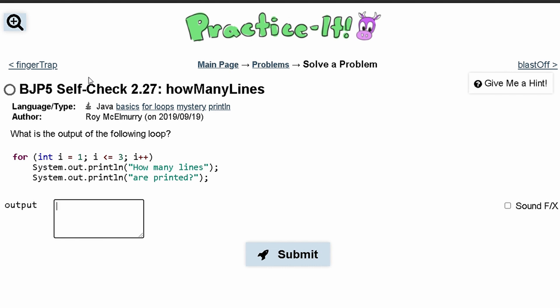For Practice-It self-check 2.27 how many lines, we are asked what is the output of the following code. We have a for loop and inside of here we have int i equals one, and then we have i less than or equal to three, i plus plus. So in here we have code, we have print lines like this.